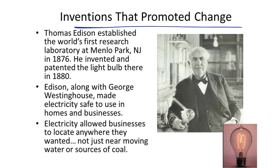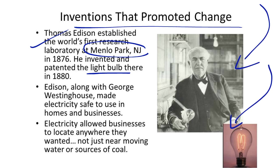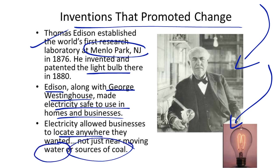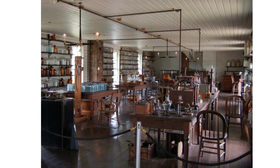There were also other inventions that promoted change. Thomas Edison established the world's first research laboratory at Menlo Park, New Jersey in 1876. He invented and patented the light bulb there in 1880. Edison, along with George Westinghouse, made electricity safe to use in homes and businesses. Electricity allowed businesses to locate anywhere they wanted, not just near moving water or sources of coal. Edison was called the wizard of Menlo Park because of the many inventions that came about in his laboratory.